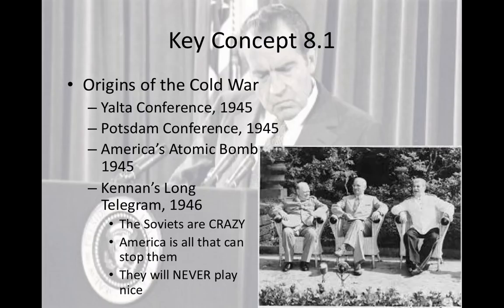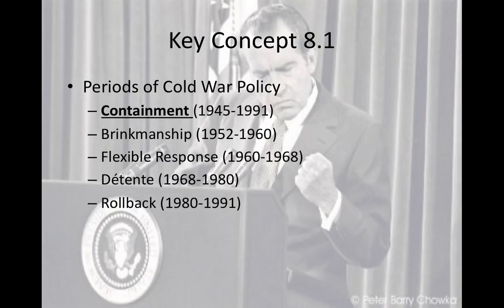Kennan was an ambassador in the Kremlin, a liaison between the American and Soviet governments, and he sent a letter to America saying the Soviets are dangerous and America needs to stop them. This indicated that America had to do something about communism, which would dictate policy for the next roughly 45 years. The different periods of Cold War policy include containment — the most important, bolded and underlined — brinkmanship, flexible response, detente, and finally rollback, seen at the end of the Cold War.